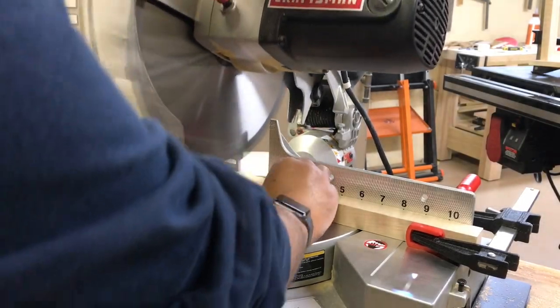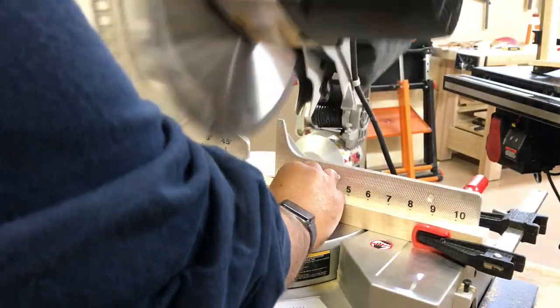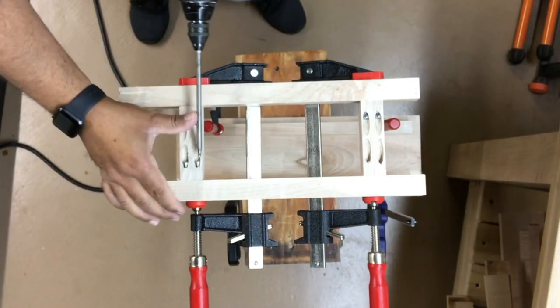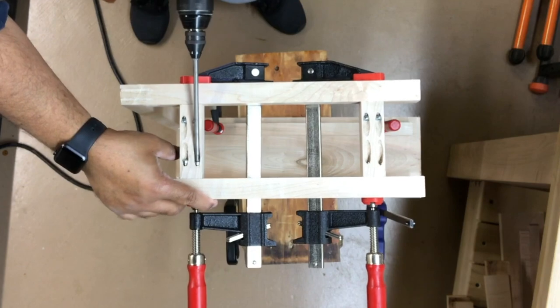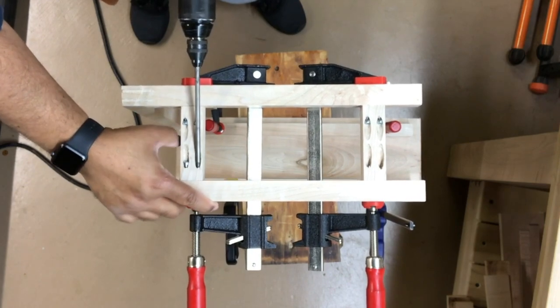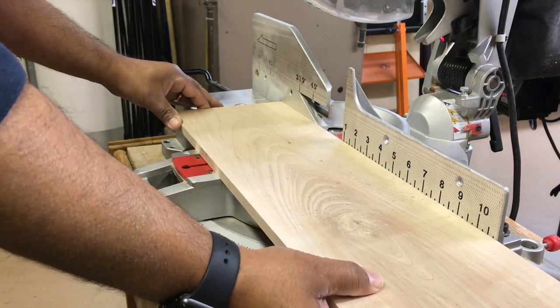Next, I turn my attention to the feet where I cut stock to bridge the two together for additional stability. These are held in place with pocket hole joinery. The next component is the top itself.